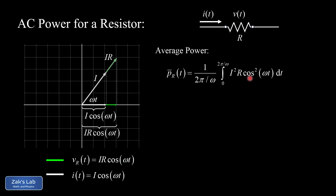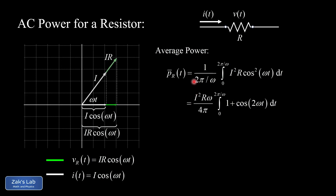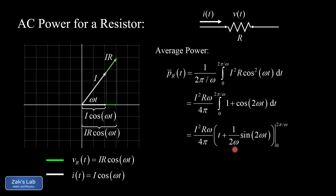Inside the integral we have cos²(ωt), a classic trig integral requiring an identity. We replace cos²(ωt) with ½(1 + cos(2ωt)). Making that substitution and cleaning up constants, we pull I²R out of the integral and absorb the ½ from the identity into the denominator, yielding a factor of ω/(4π) out front. Now we need to integrate 1 + cos(2ωt).